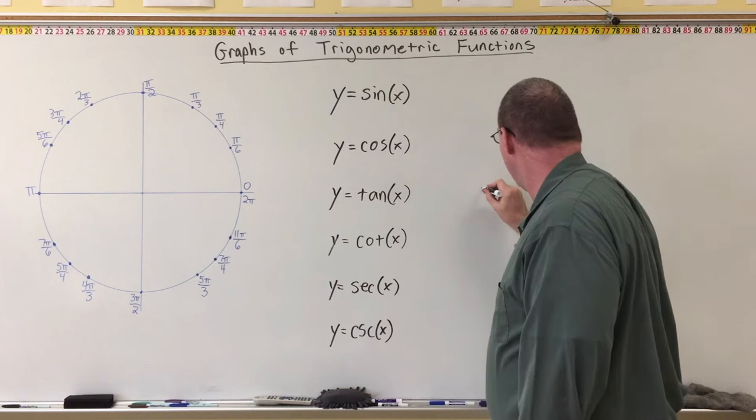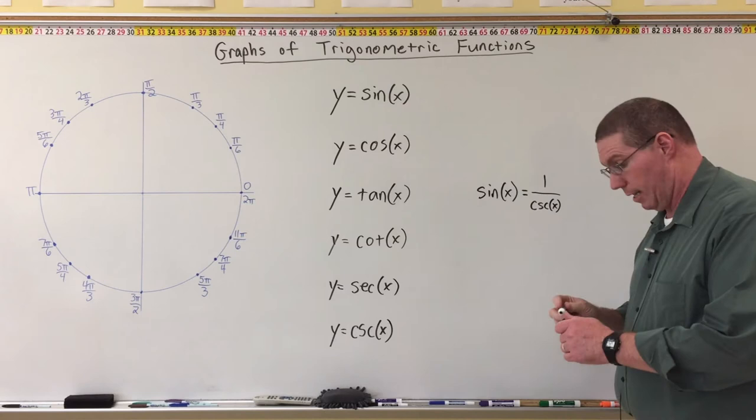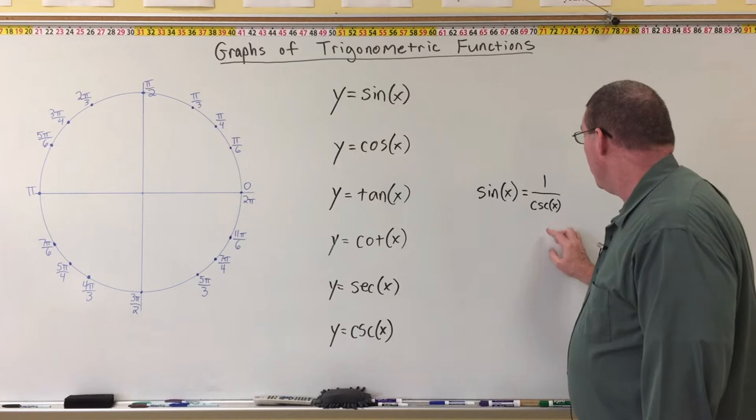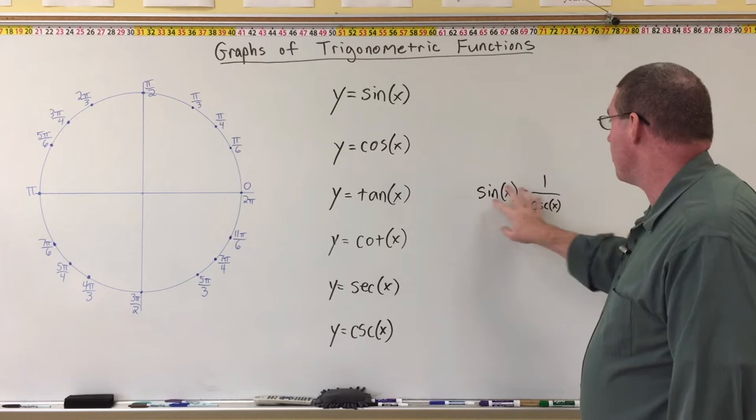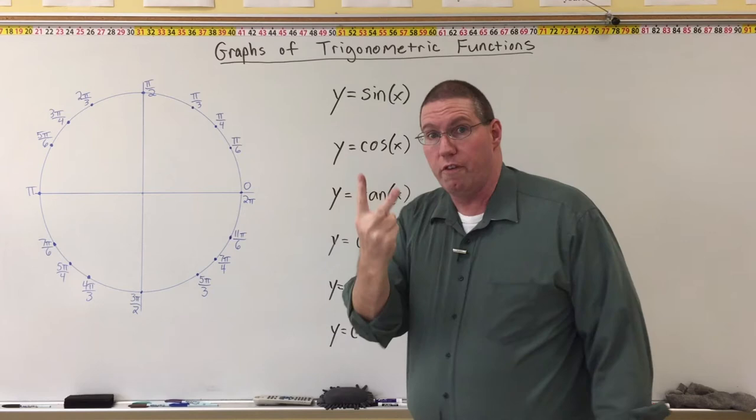We've also dealt with identities like sine of x equals one over cosecant of x, which is one of our basic identities in trigonometry. There we only had one x value, plugged in on both sides — just an equality that makes it true. But in this particular case, what we have is one equation with two variables.